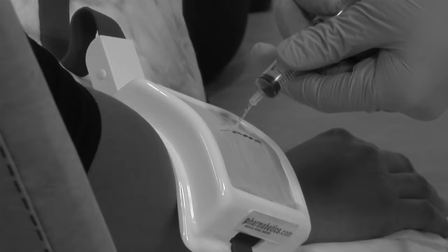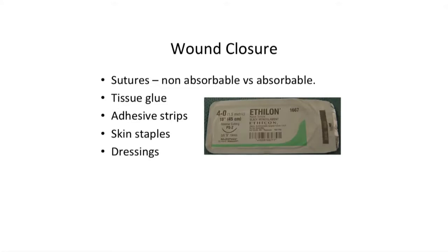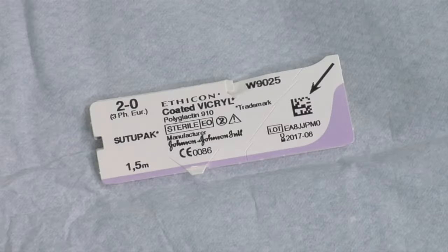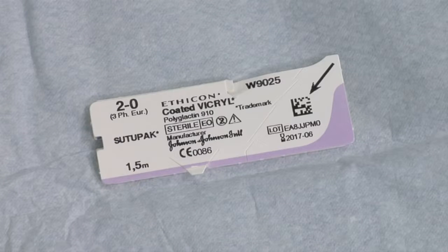A scalpel should be used to resect any non-viable tissue and to trim the edges of old wounds. Be extremely cautious in areas such as the face, scalp, and hands, where skin is at a premium. Once thoroughly cleaned, the wound can be closed. Interrupted, non-absorbable nylon sutures allow drainage, reduce risk of tracking of infection, and minimise tissue tension and ischaemia. If there is likely to be tension on skin sutures, or there are potential spaces within the wound where a haematoma could form, deep absorbable sutures made from polyglycolic acid or catgut can be used.